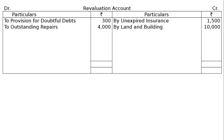Revaluation account entries: Credit side — unexpired insurance account debited 1,500 and land and building account debited 10,000, to revaluation account 11,500. Debit side — revaluation account debited 4,300: to provision for doubtful debts 300, to outstanding repairs 4,000.